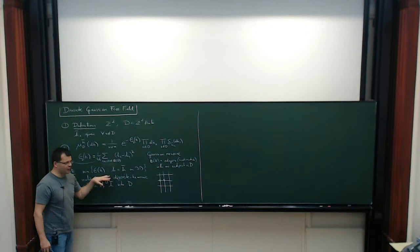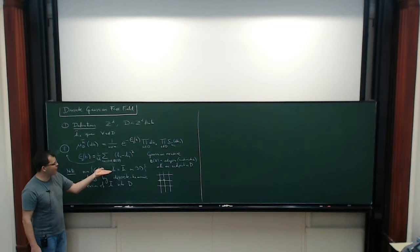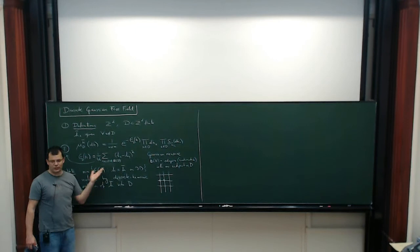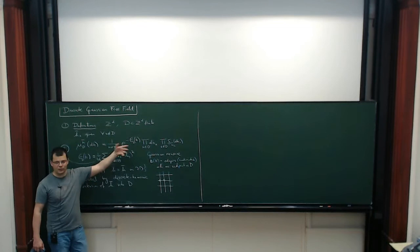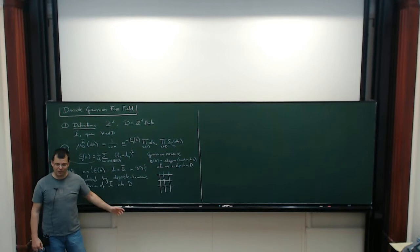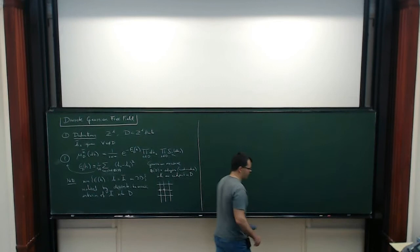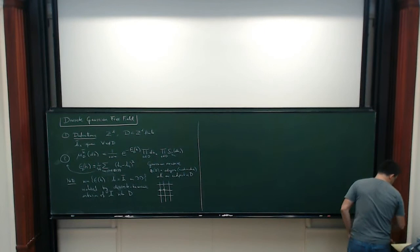The picture you want to have in mind is that the minimum of the energy is given, and this describes fluctuations around that minimum, weighted by some exponential. This is the Gaussian object. So let me write one lemma.